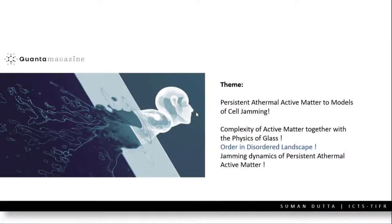We'll start with persistent athermal active matter, which was introduced in the morning session by Rajesh. I'll also talk about different molecular models that show cell jamming, and we'll touch upon the complexity of active matter clubbed with the physics of glass. This is a very difficult problem — the focus will be on order in the disordered landscape.